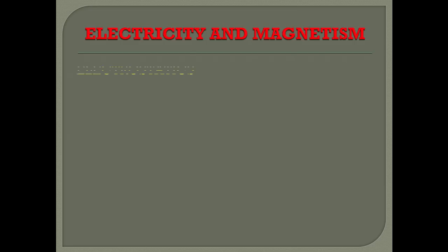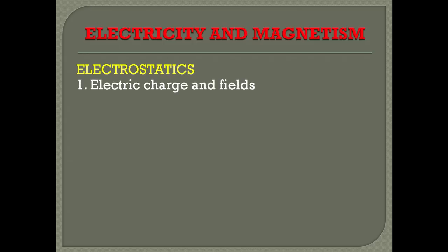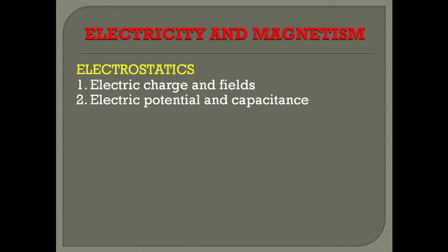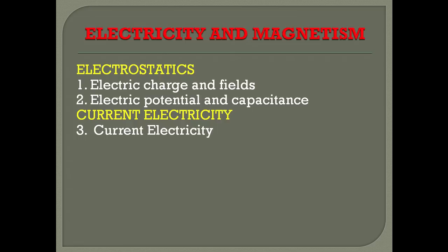In electricity and magnetism, the first topic is electrostatics — the study of electric charges at rest. We are going to study electric charges in detail in the first chapter, 'Electric Charge and Fields,' and in the second chapter, 'Electric Potential and Capacitance.' That covers all of electrostatics — understanding charges thoroughly in these two chapters.